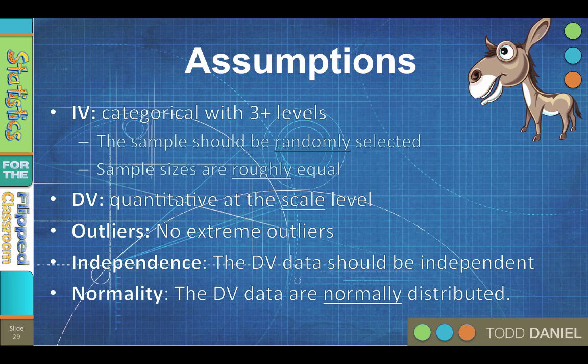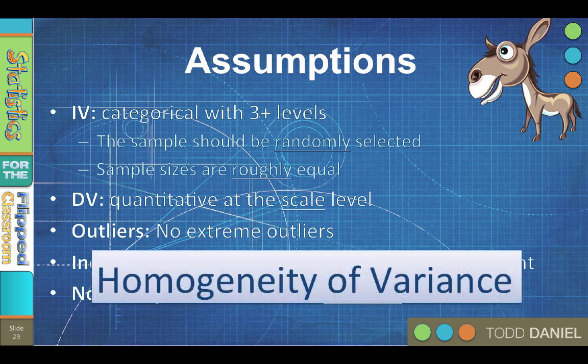Also, the groups should have homogeneity of variance, which you will test for using Levine's test for equality of variances just as we did with the t-test. If the dependent variable groups fail this assumption, rerun the ANOVA and report Welch's ANOVA instead.